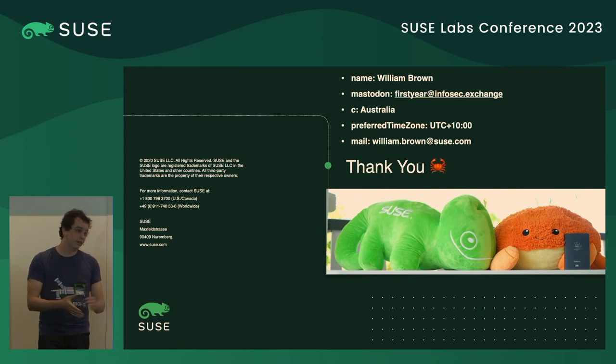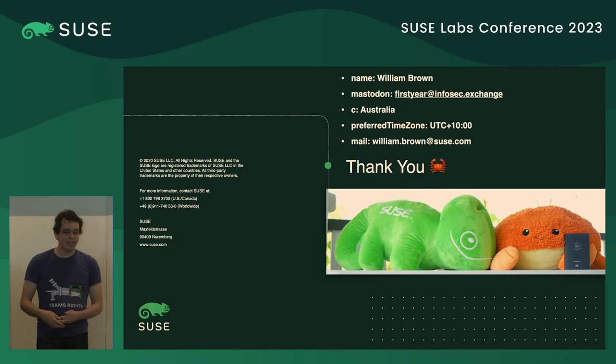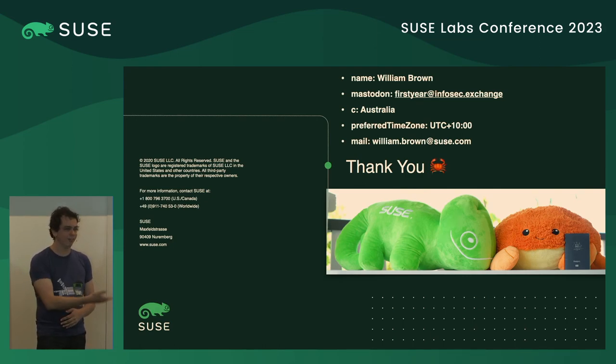We write software not for ourselves but for other people who are just as intelligent as us but with different sets of backgrounds and skills. They might be distracted — maybe they've just had a day dealing with Git and need to run out for a coffee and get angry at the door.